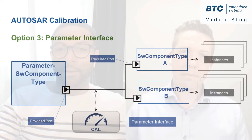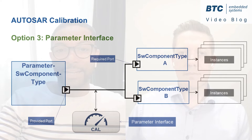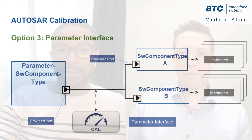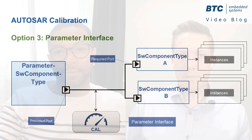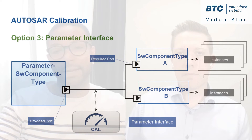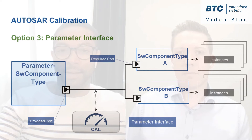The third option is the one which enables any instances of any software component types to access the same calibration. This option is supported with the AUTOSAR parameter interface, and in this case the specific component type, called parameter software component type, is responsible to produce the calibration data and the other components can access it.